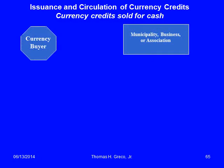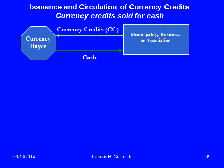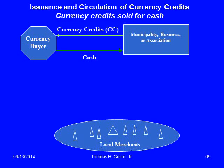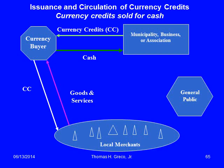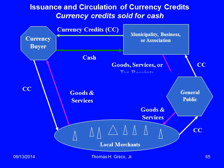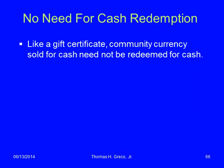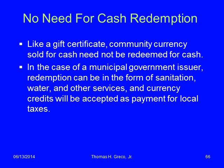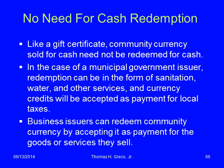In this diagram you have the municipality, business or association, and the buyer of the currency. The buyer gives up cash and receives currency credits in return. Local merchants accept the community currency for goods and services, and can exchange it among themselves. Eventually the community currency comes back to the issuer — not necessarily in return for cash, but in return for goods and services, or in the case of a municipality, as tax receipts. There's no need for cash redemption; you can redeem in kind.